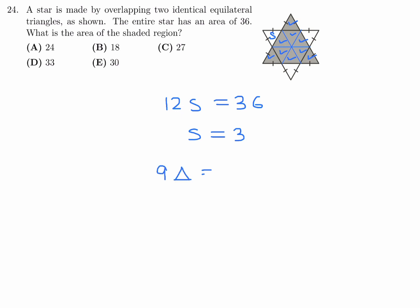So each triangle is, well, I labeled it as S. And S has a value of three. So that's 27. And that represents the area of the shaded region. So number 24, very quickly, we were able to figure out that the answer is C.